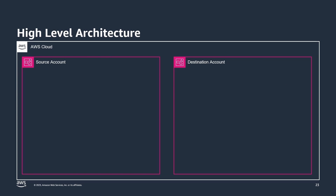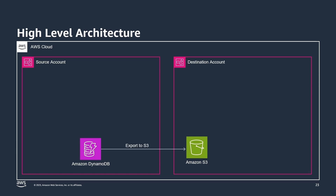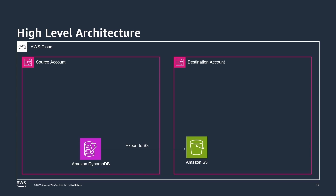This is the high-level architecture for this approach. First, we use DynamoDB's native export to S3 feature to export data from the DynamoDB table in the source account to an Amazon S3 bucket in the destination account. Then we use an AWS Glue crawler to catalog the exported data. Once the data is cataloged, we use AWS Glue jobs to import the data from S3 into existing or new DynamoDB tables in the destination account.